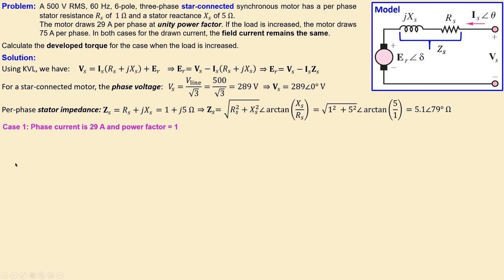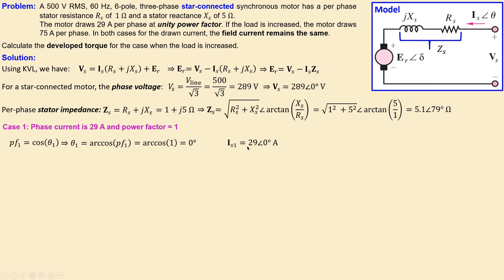Now for Case 1, the phase current is 29 amps at unity power factor. The power factor equals the cosine of the current angle theta₁. Since the power factor is one, theta₁ equals zero degrees. So the phase current for Case 1 is 29∠0° amps.